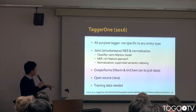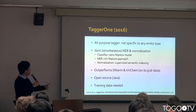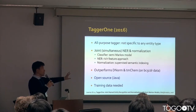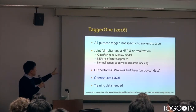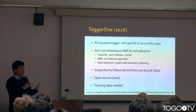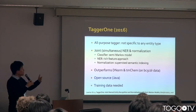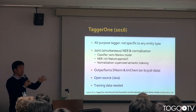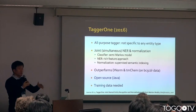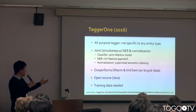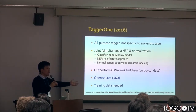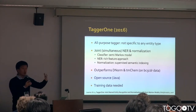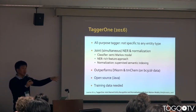Recently the NCBI team released a new tagger based on machine learning techniques. It's an all-purpose tagger, so it can tag any kind of bio concept. The only requirement is that it needs some training data to learn how to tag entities.